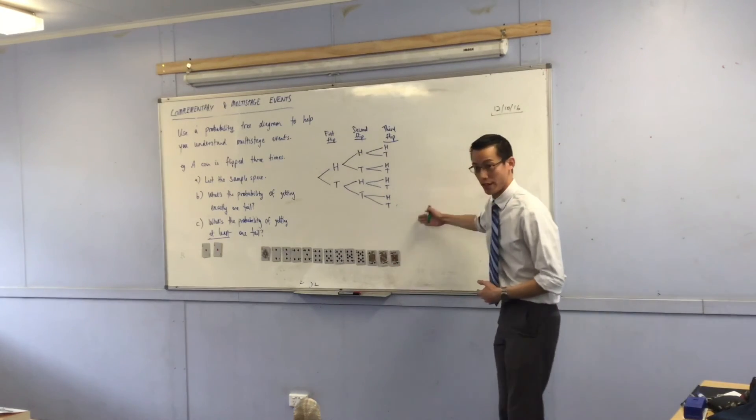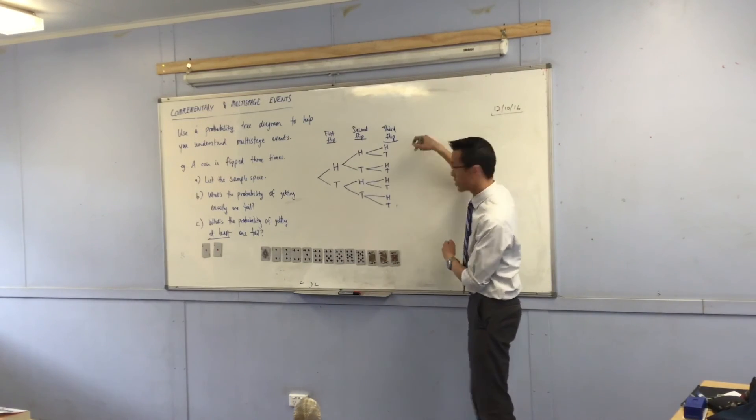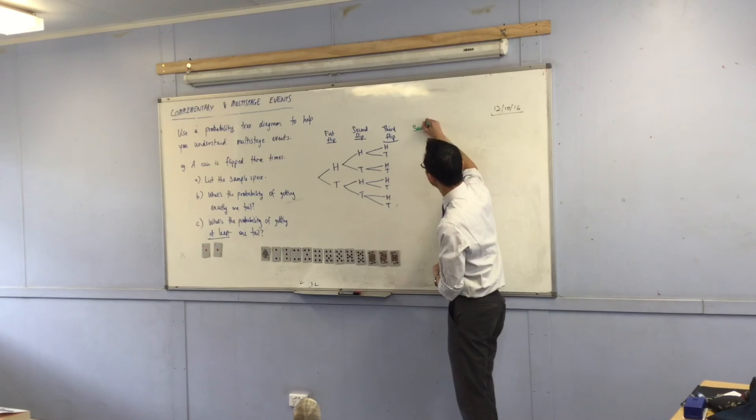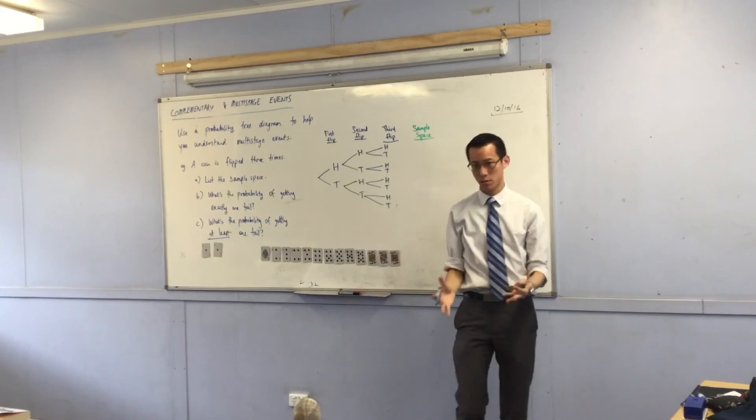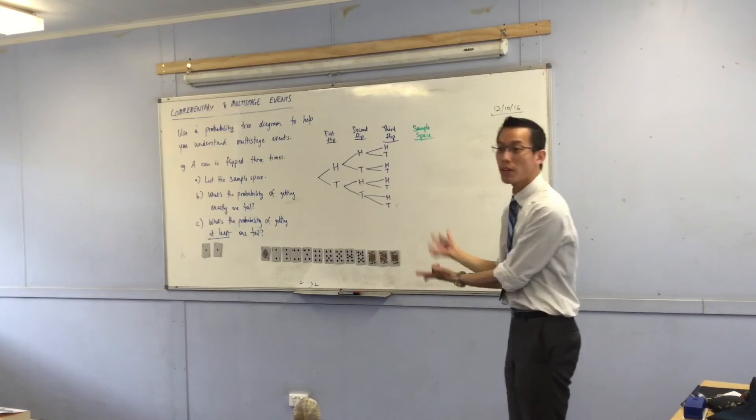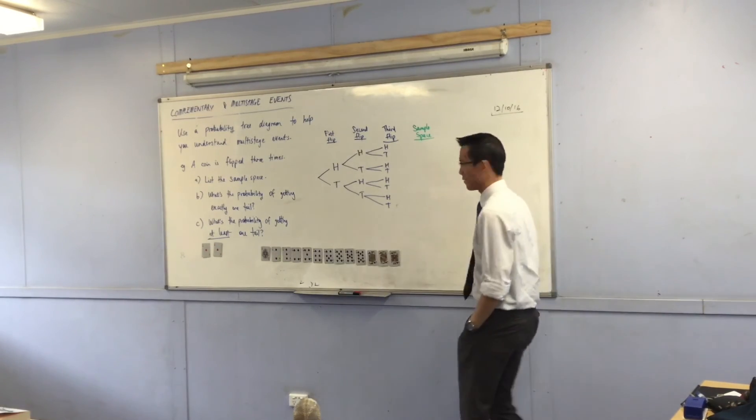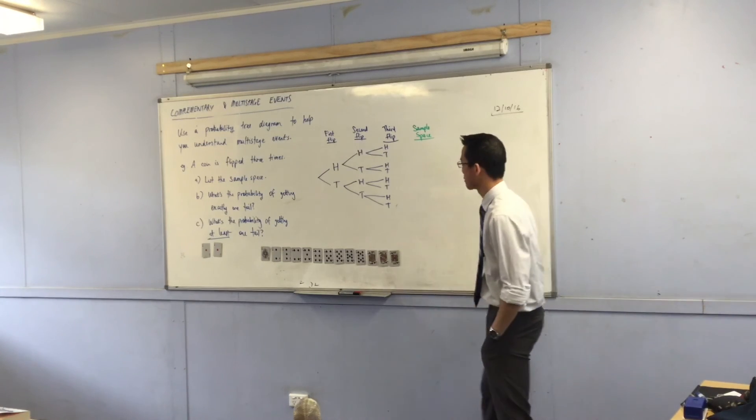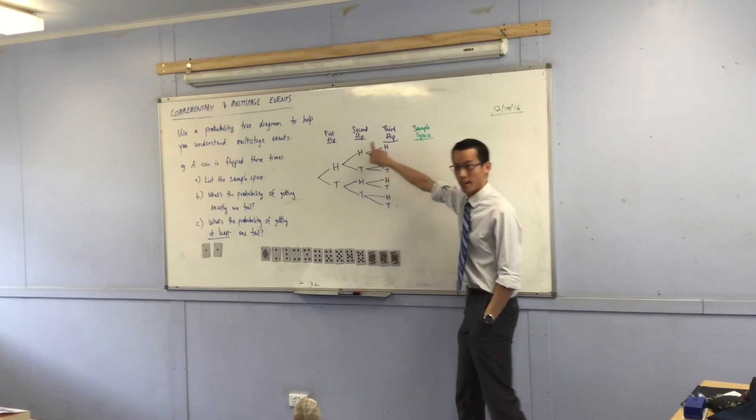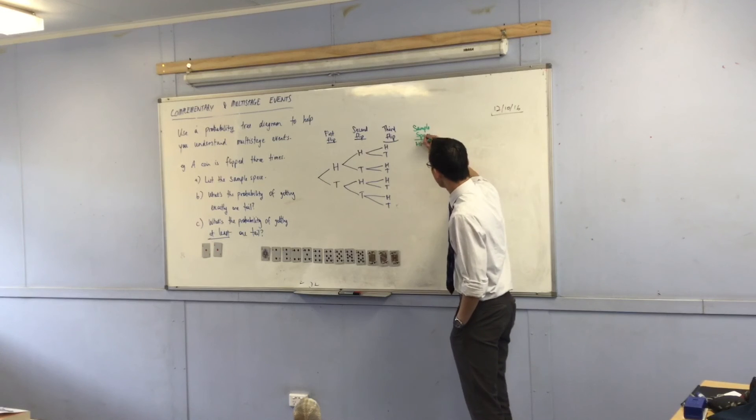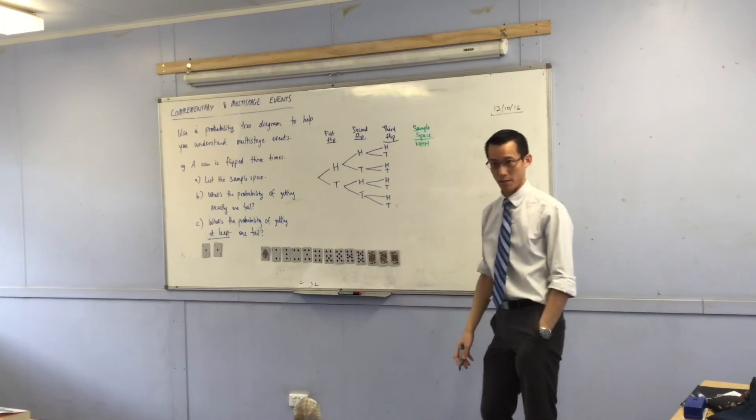So I'm going to use this probability tree and then over here on the right hand side, I'm going to list the sample space because every possible event that could happen is all here in my tree. I'm just going to follow the branches. So let's look at the one that actually happened by chance. I've got a head, and then a head, and then a head. So that is one of the options.